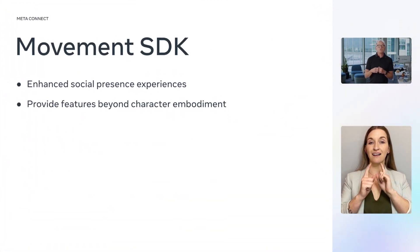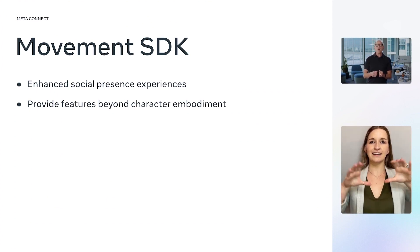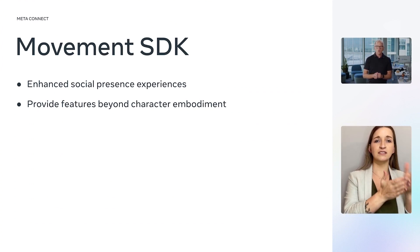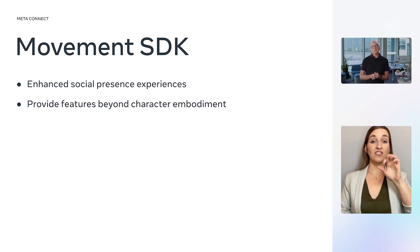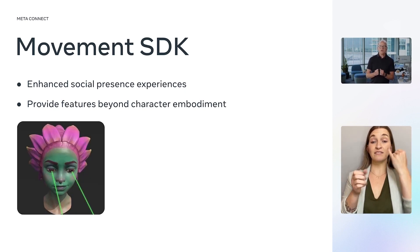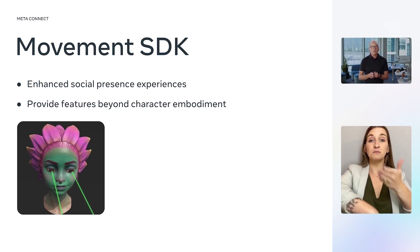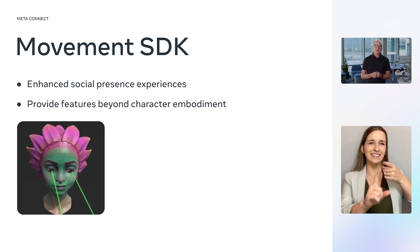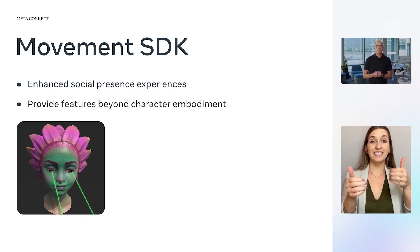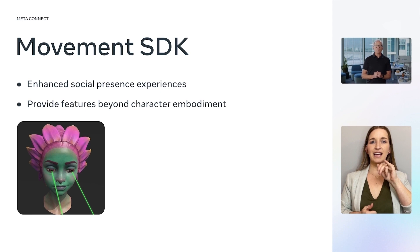Using these abstracted signals, developers can animate characters with social presence or provide features beyond character embodiment. One might use face blend shapes to detect if the user's relaxed, eye gaze to determine areas of interest or to improve targeting in a shooting game, or body tracking to animate a character in an action game. We are sure that there are hundreds of use cases that will be supported by our innovative developers.